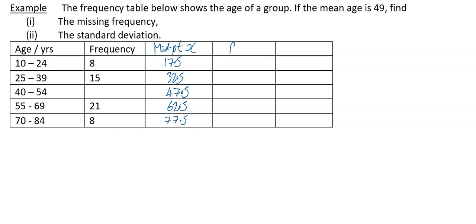We also will need to do our FX column to be able to find the missing frequency. So your FX column, if you multiply these all out: I'm doing 8 times 17.5 to give me 140. I'm doing 15 times 32.5 to give me 487.5. And then this one, if I call my missing frequency A, I will have 47.5 times A. The next one is back to the numerical value, 1312.5, and the last one, 8 times 77.5, is 620.